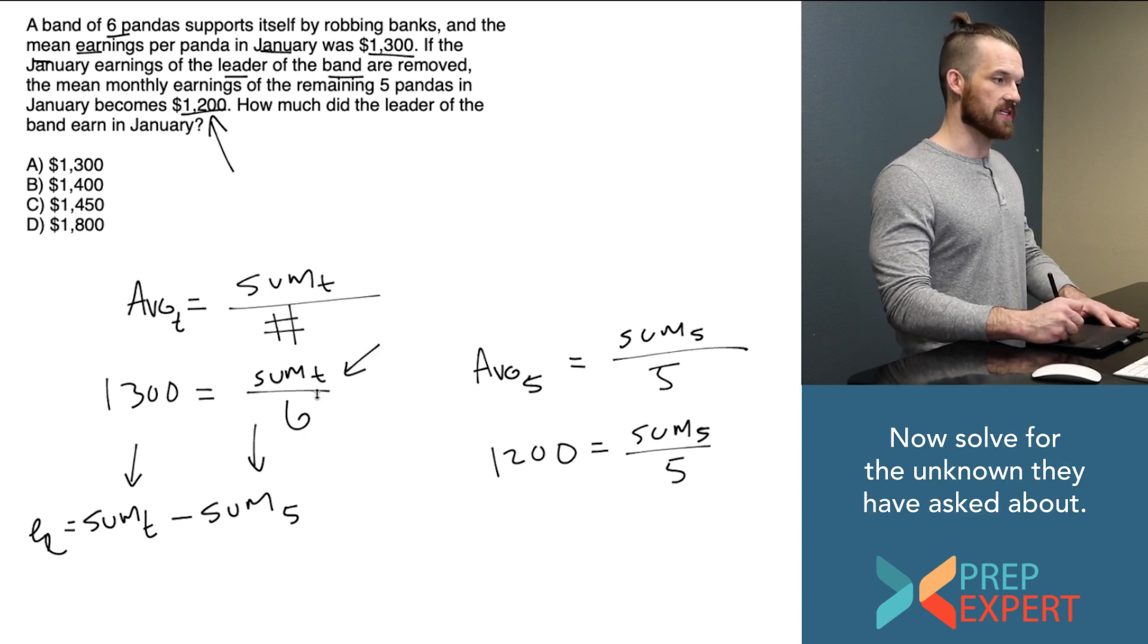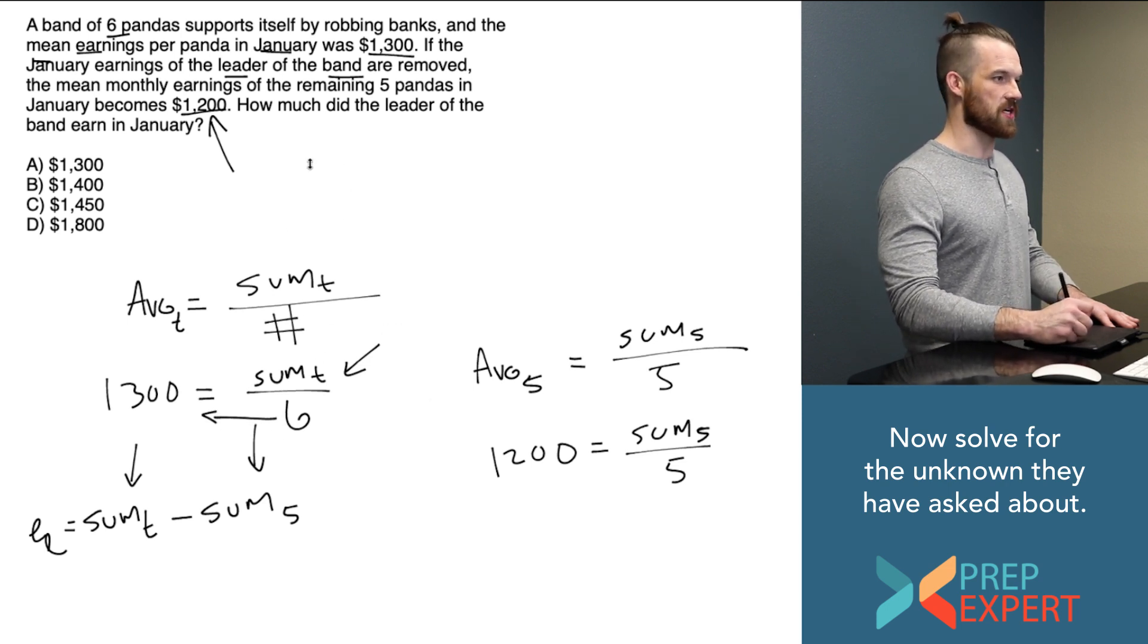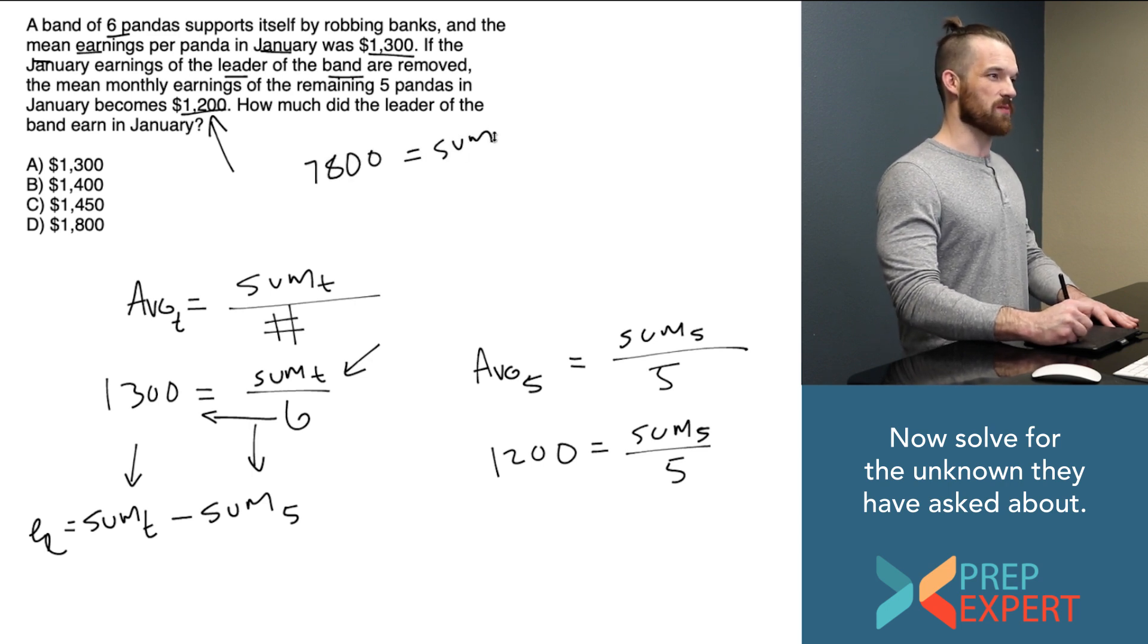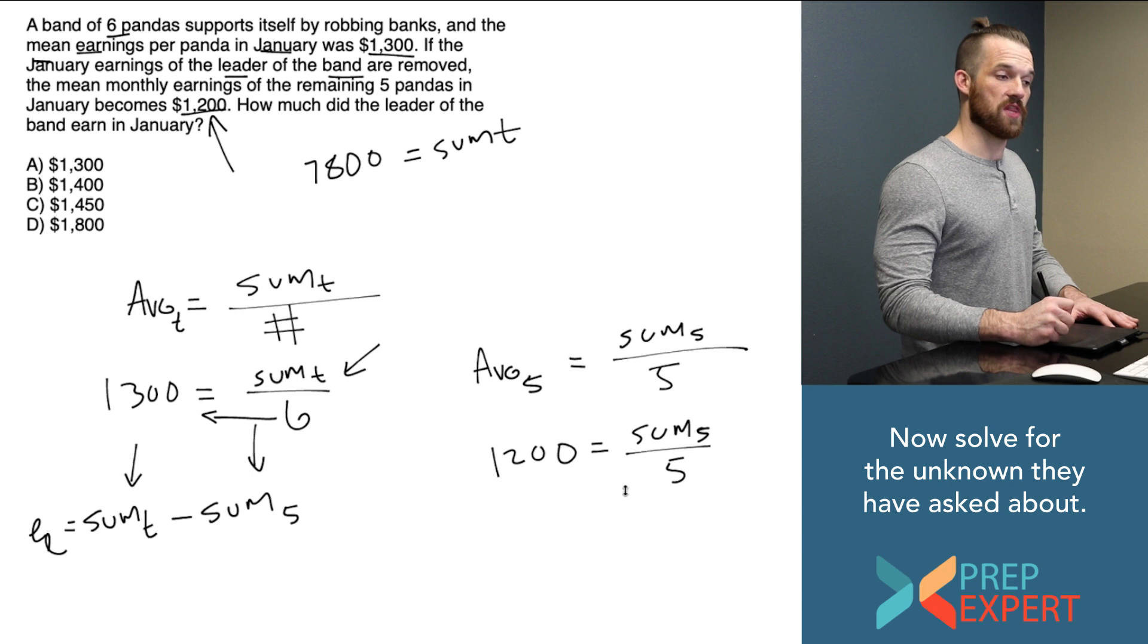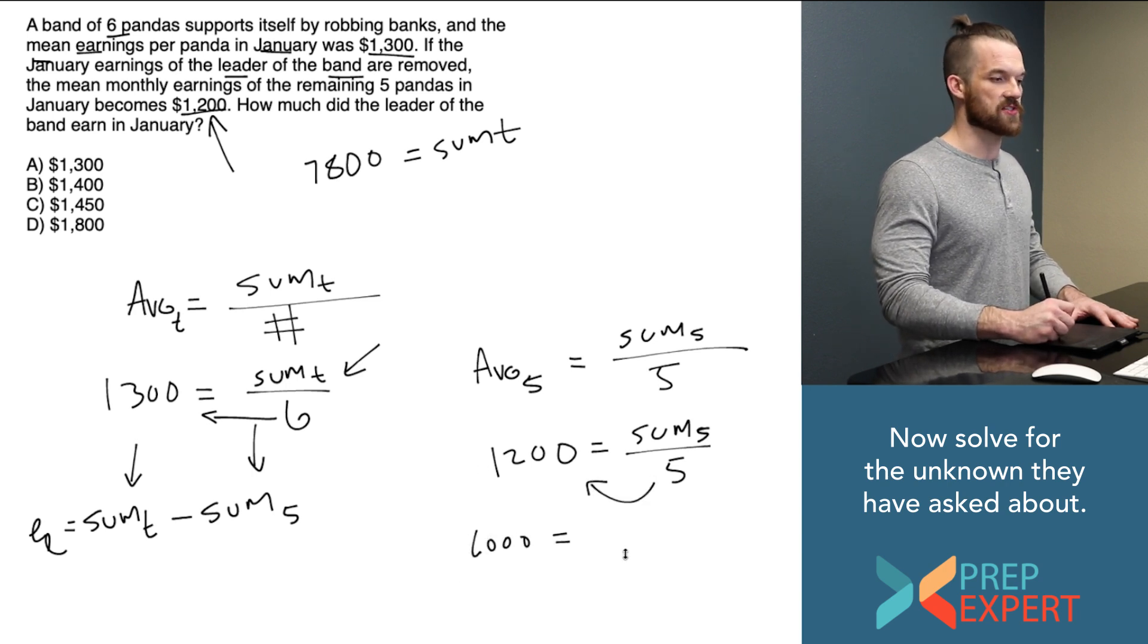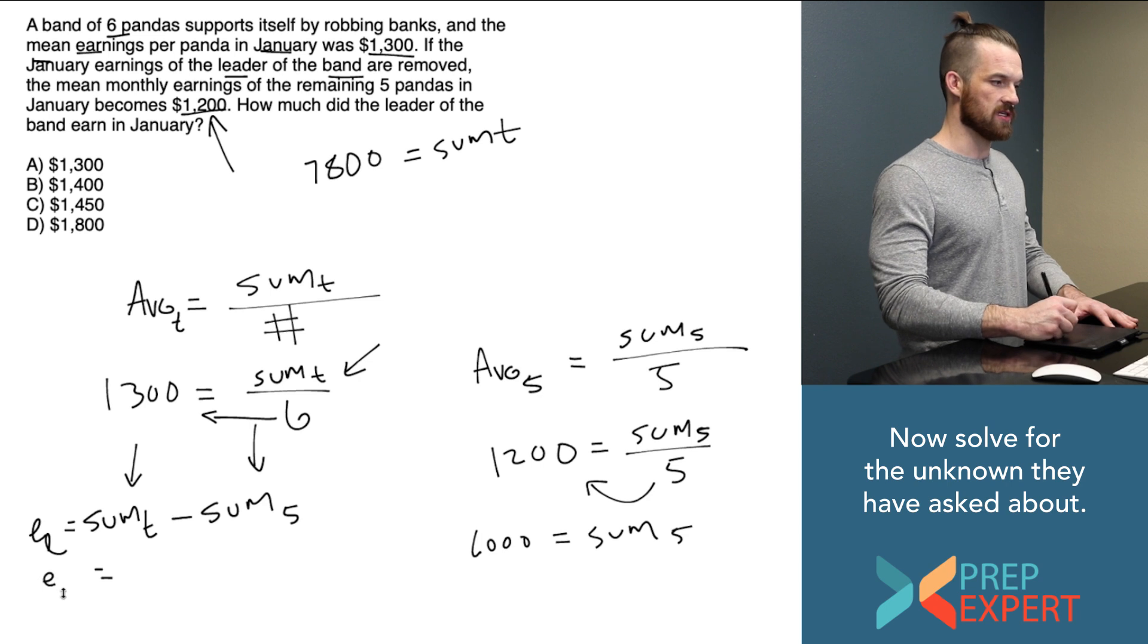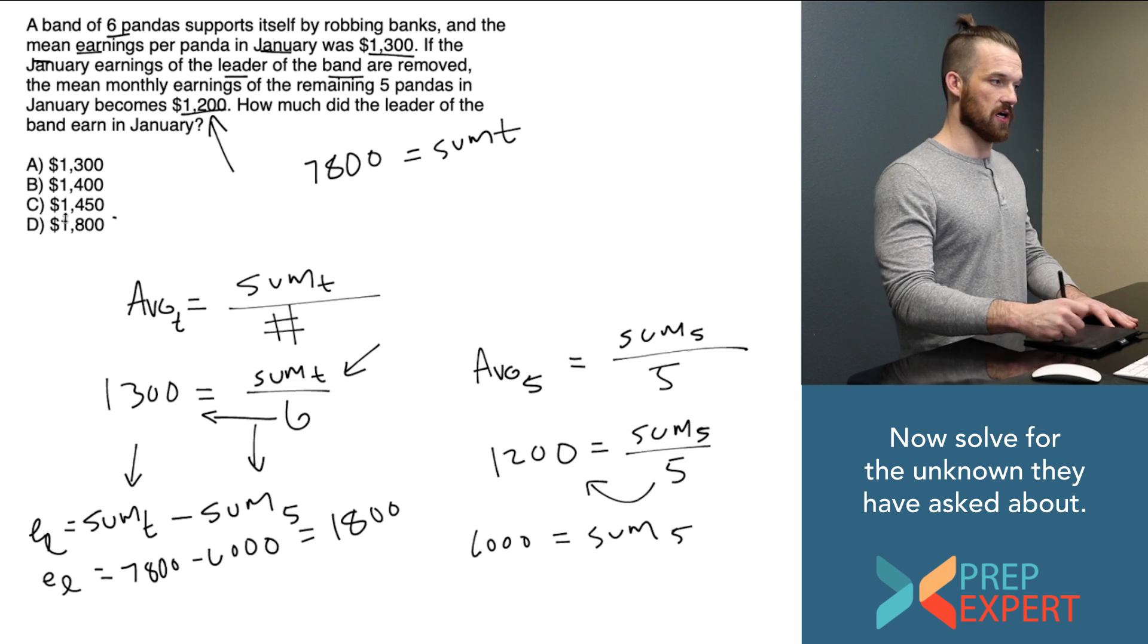So I can calculate what sum T is. All I have to do is multiply each side of this equation by six. When I multiply each side of the equation by six, it cancels on the right and then six times 1,300 is going to be 7,800. So it looks like my sum total of earnings for everyone in January was 7,800. What about my sum for the five pandas who aren't the leader? Multiply each side by five. Five times 1,200 is 6,000. So the sum for the five pandas who aren't the leader is 6,000. I can plug both those numbers in. Again, E sub L, the earnings of my leader, 7,800 minus 6,000. So it looks like the sum earnings of my leader are 1,800.